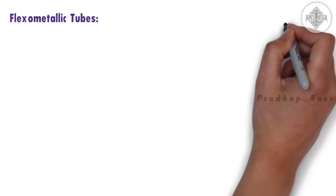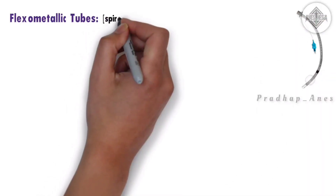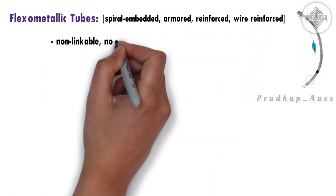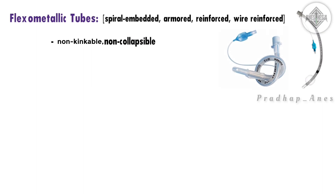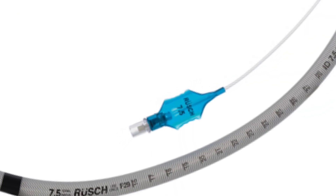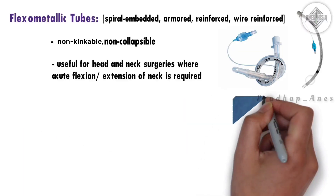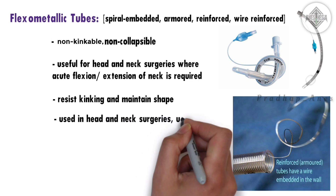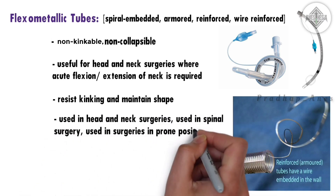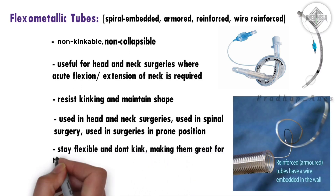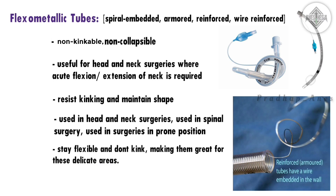Flexometallic tubes, also known as spiral-embedded, armored, reinforced, or wire-reinforced tubes, are non-kinkable and non-collapsible, making them very useful for head and neck surgeries where acute flexion or extension of the neck is required. They combine rubber, PVC, or silicone with a strong metal or nylon spiral wire inside for flexibility and durability. They resist kinking and maintain shape. These tubes are used in head and neck surgeries, spinal surgery, and prone position surgeries.